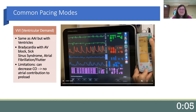VVI does the same as AAI, but only for the ventricles. VVI can be used in any setting where AV node conduction is blocked. It can also be used in bradycardias, sick sinus syndrome, or in atrial fibrillation and atrial flutter. However, given there is no atrial kick provided by this mode, it can decrease cardiac output.